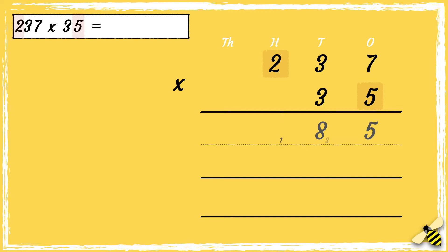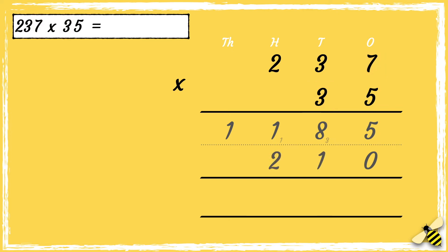Now we need to multiply 5 by 2 hundreds — 2 times 5 is 10, add 1 more is 11. Now we need to multiply 3 tens by 7. As we're multiplying the number by 3 tens, we need to use zero as a placeholder in the ones column. With zero as our placeholder, we can multiply 3 tens by 7 — 3 times 7 is 21. We can drop the 2 below in the hundreds column.